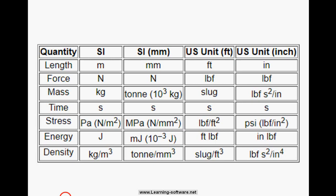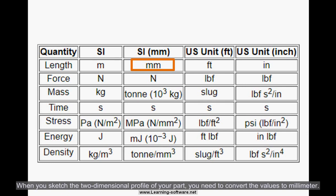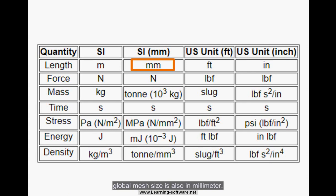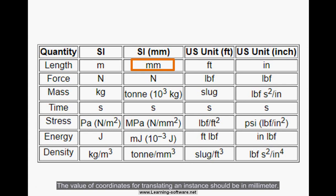Let's define SI units. All lengths should be in millimeters. When you sketch the two-dimensional profile of your part, you need to convert the values to millimeters. Apply displacement boundary conditions and values in analytical fields should be converted to millimeters. Global mesh size is also in millimeters. The value of coordinates for translating an instance should also be in millimeters.